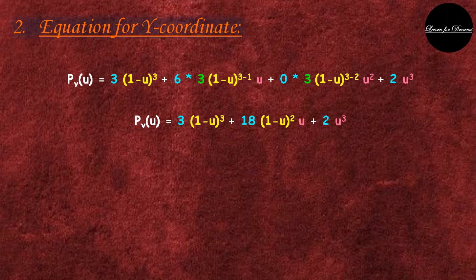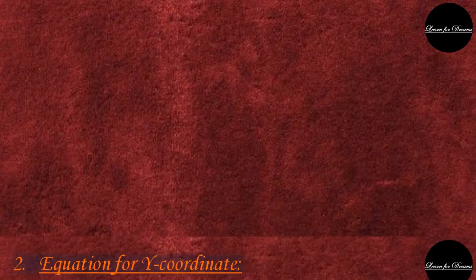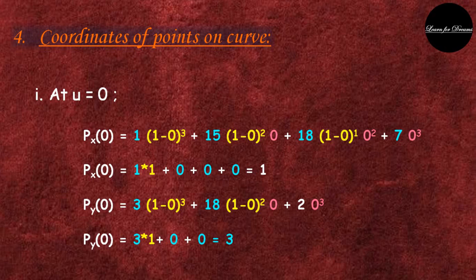This is the equation for y coordinates. So these are the equations for Bezier curve. Value for u should lie between 0 to 1. Then we will find x and y coordinates for given u values: 0.2,